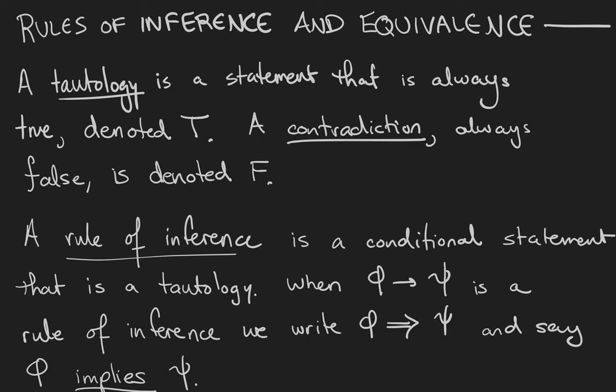A tautology is a statement that is always true, denoted with a capital T, just like we denote the word true. A contradiction, always false, is denoted with a capital F.